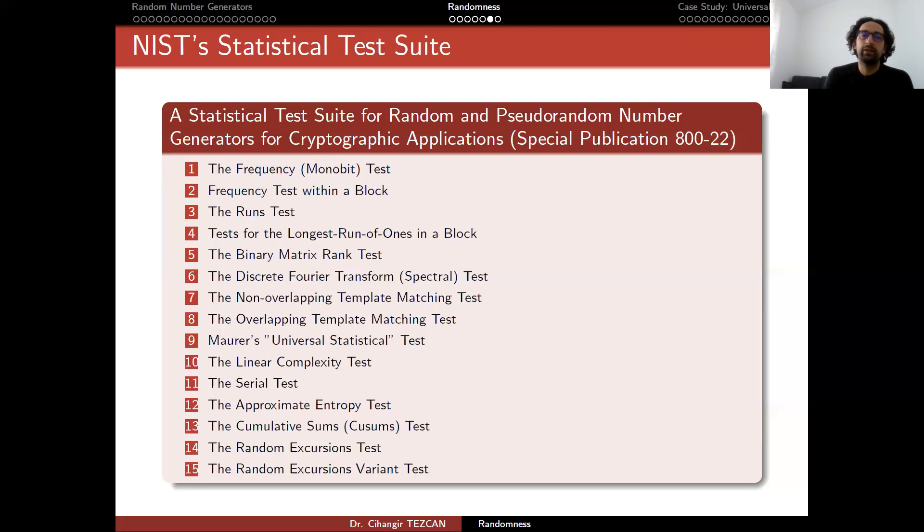In order to do that, you have to define your threshold. For instance, if you choose your threshold one over a thousand, this means that among all of the sequences of length N, 1 over 1000 of them would fail this test. So you are trying to eliminate the bad ones. But of course, if you choose your threshold something higher like 1 over 100, then you will eliminate every 100 sequence here.